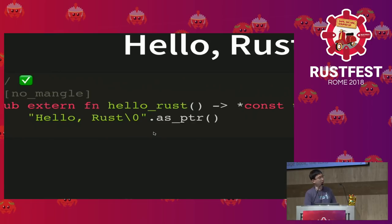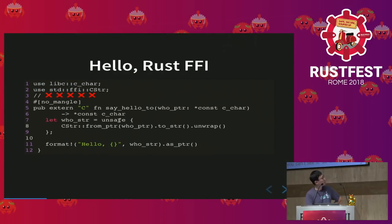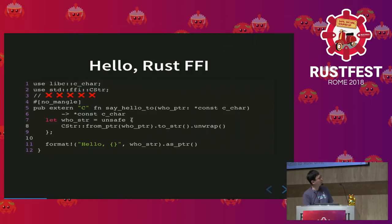What if we want the function to say hello to more languages? We add another parameter called who_ptr, which is a pointer to a string in C. You can pass Python or Go here to our Rust function. The function body has essentially two lines of code: the first line converts the pointer to CStr, then we convert CStr to a Rust str, and we use the format macro to concatenate 'hello' with the input and return it as a pointer.